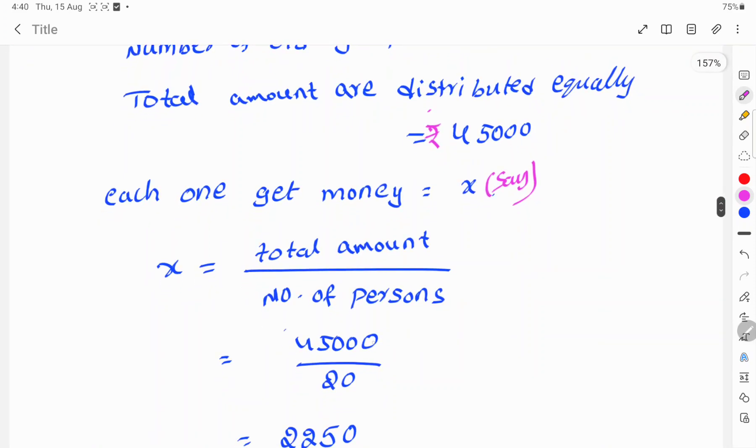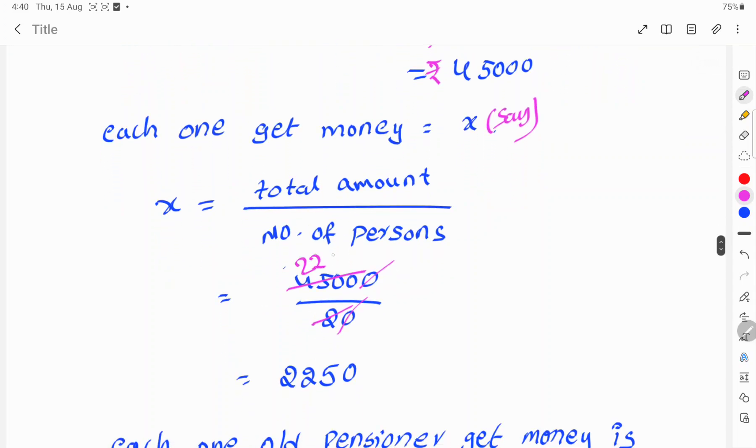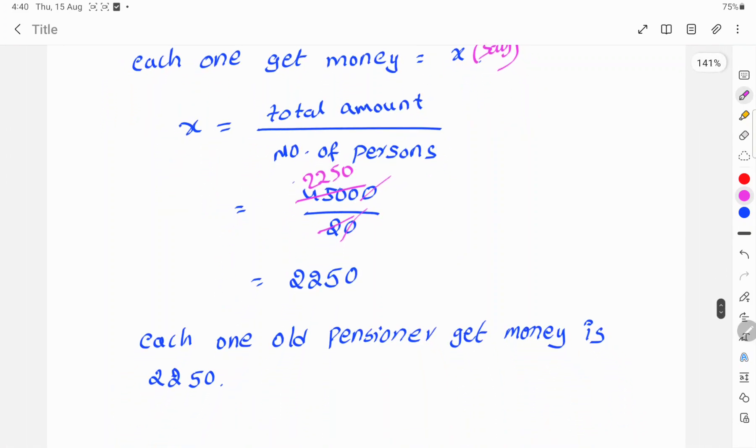Total amount is 45,000 divided by 20 people. Canceling the zeros, we have 4500 divided by 2, which equals 2250. Each old age pensioner gets 2250 rupees.